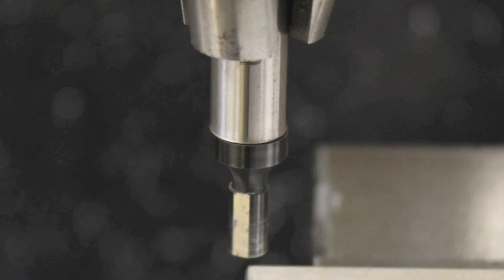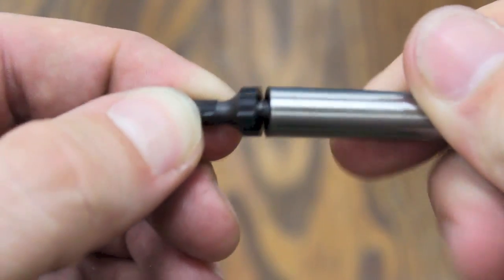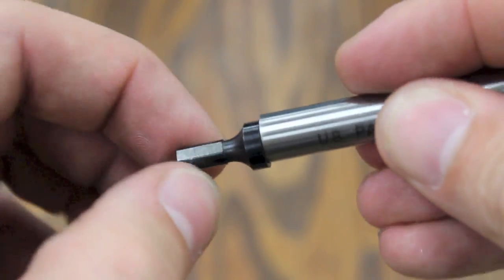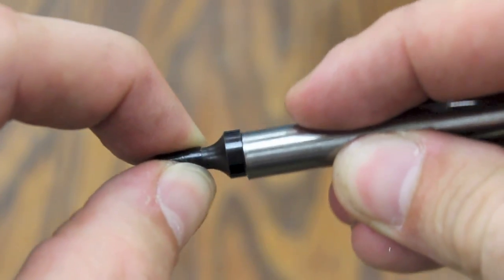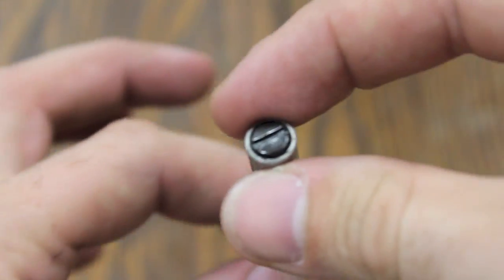Notice the construction of the edge finder. The shank is short and rigid, and the end of the edge finder is spring-loaded. Notice how the spring-loaded portion moves around freely when touched.